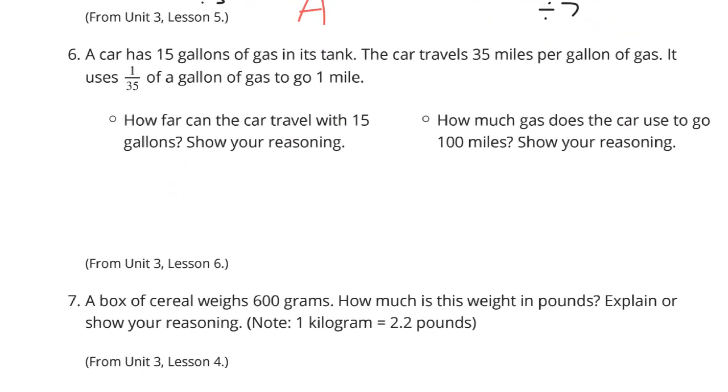Two questions to go. Question six. A car has 15 gallons of gas in its tank. The car travels 35 miles per gallon of gas. It uses 1/35th of a gallon to go one mile. How far can the car travel with 15 gallons? Show your reasoning. Well, we're given 15 gallons here. And so, I think it's much more useful to use the unit rate in this question that tells me how far I go in gallon of gas. We've been setting up tables for these in the past. So, miles and gallons. And our unit rate is telling us we're going 35 miles per gallon. And we want to get to 15 gallons. So, that's quite frankly as simple as just multiplying by 15 here. And 35 times 15 is going to be 525 miles in those 15 gallons.